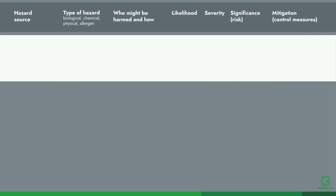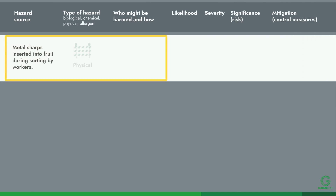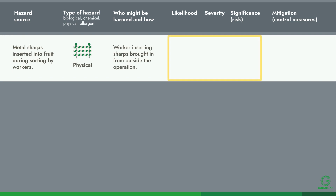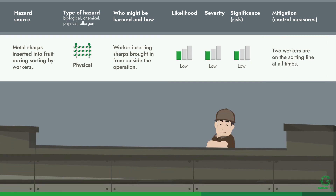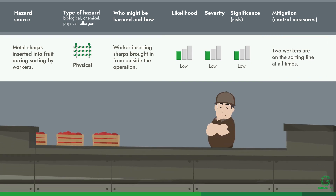As with the other risk assessments in this series, the first steps are identifying the hazard, determining the likelihood and severity of their occurrence, and then identifying mitigation strategies. Here are a few examples of food defense risks.